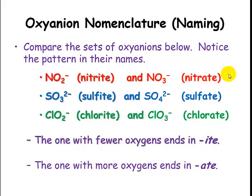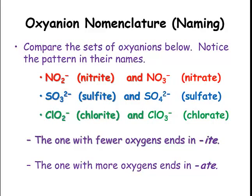Let's look for the pattern in these names. The '-ite' version: nitrite has two oxygens, nitrate has three. Sulfite has three oxygens, sulfate has four. Chlorite has only two oxygens, and chlorate has three. So the one of the pair that has fewer oxygens gets the '-ite' ending, and the one with more oxygens gets the '-ate' ending. Fewer oxygens: '-ite'. More oxygens: '-ate'.